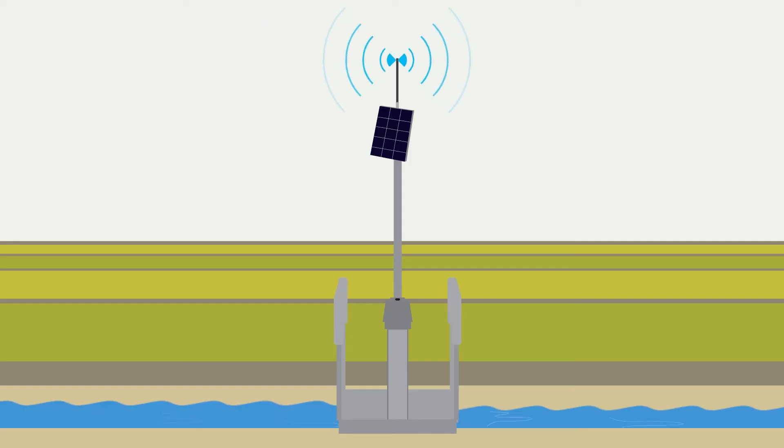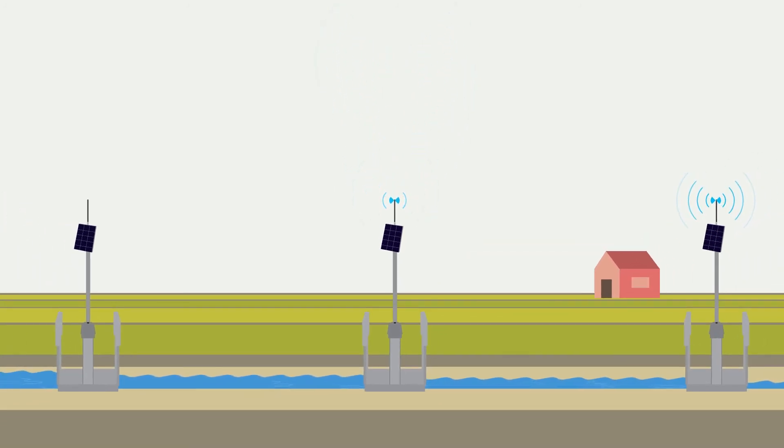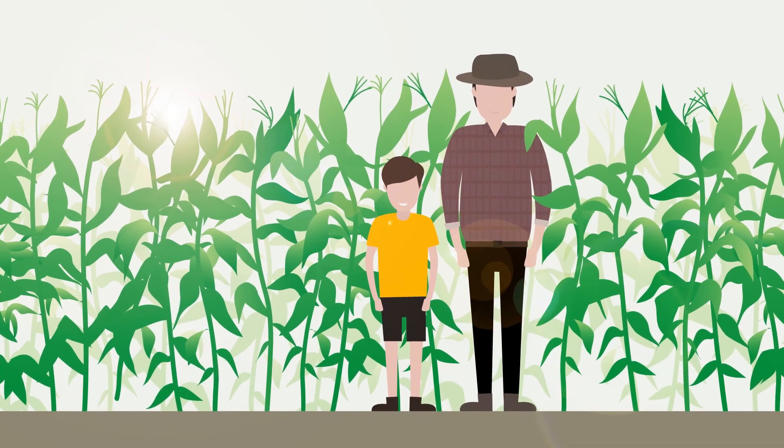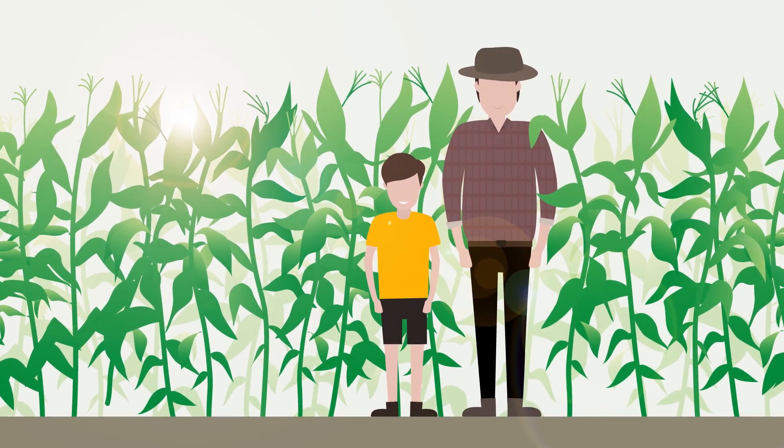And best of all, the flume gate's networking technology means they can share information with each other to achieve system-wide objectives, enabling a whole canal network to be autonomously managed, eliminating spills and providing a responsive, efficient supply service.